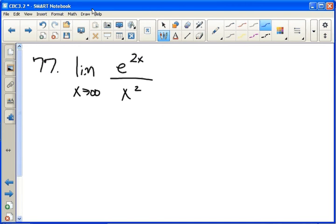So we have infinity over infinity, and we need to take the derivative at the top and the bottom, which is what L'Hôpital's rule is. We get that I can cancel out the twos, so I have e to the 2x over x.